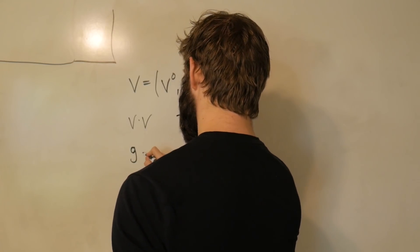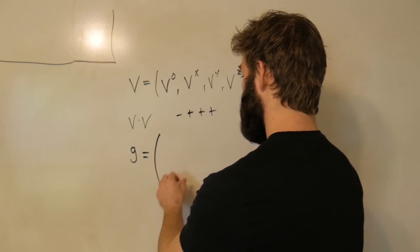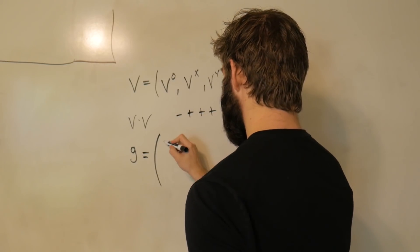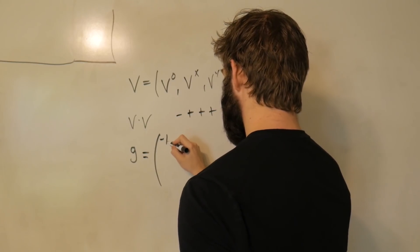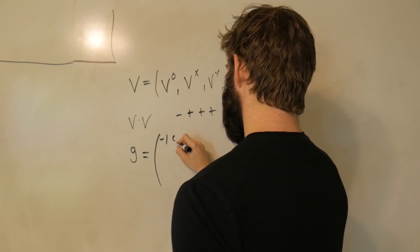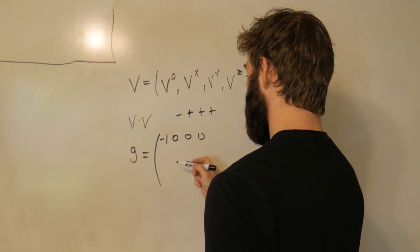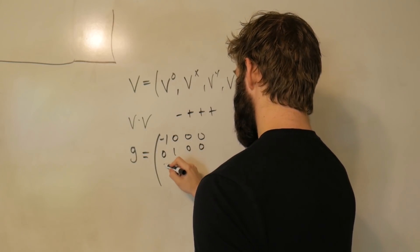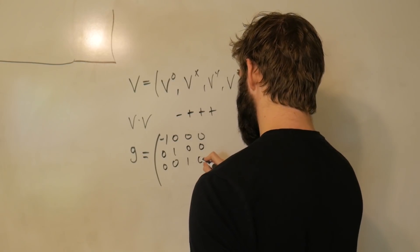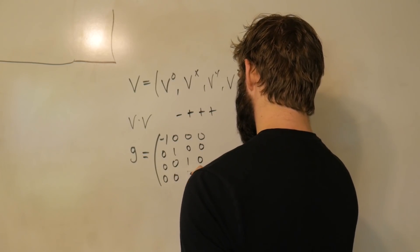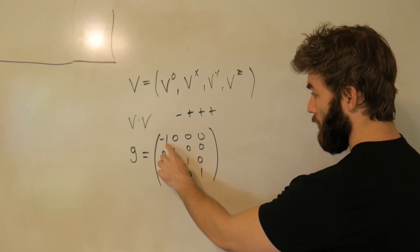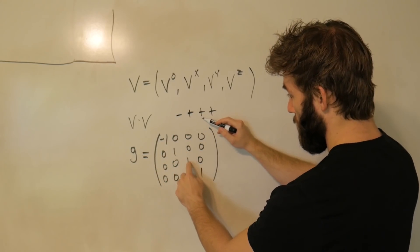And what that means is you can define some metric g, which is going to be a diagonal matrix. The first component's going to be minus one, zero, zero, zero, so it's going to be a four by four, zero, one, zero, zero, zero, zero, one, zero, zero, zero, zero, one. So we've got a diagonal matrix, minus, plus, plus, plus.